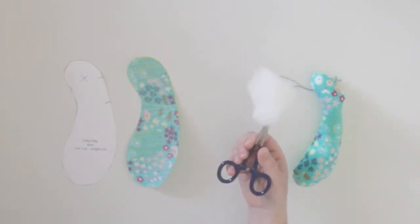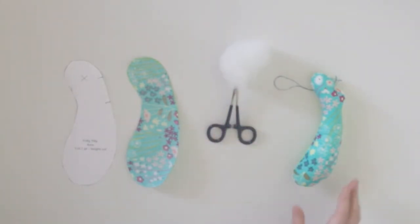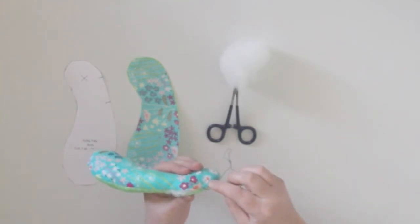Then we can stuff the arms with hobby fill. And then once we have done all that, we then do an invisible stitch. And now, the magical invisible stitch.